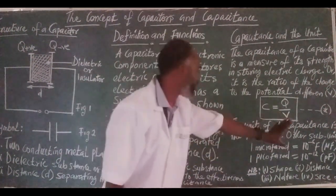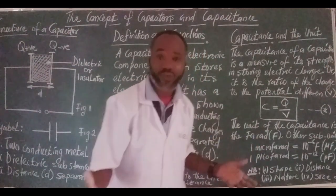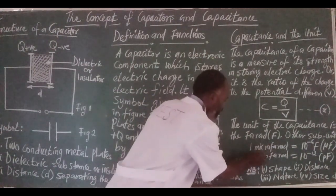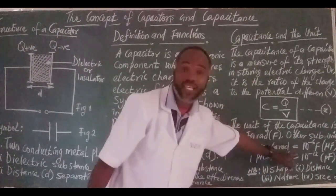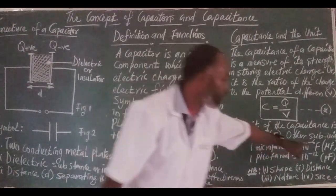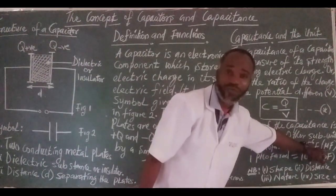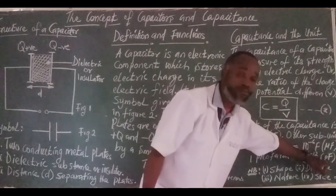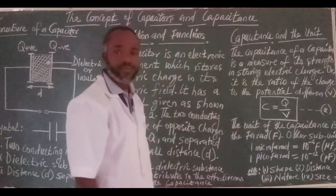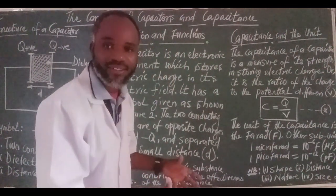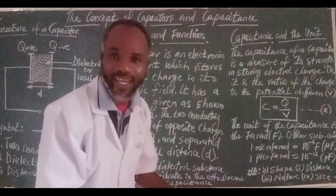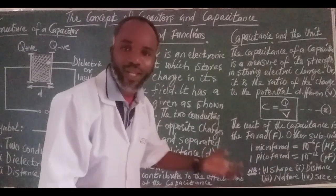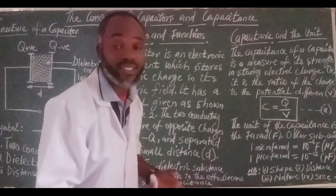Away from that, we have the unit of the capacitance as the farad. But there are also other sub-units such as one microfarad, which is equal to 10 raised to the power minus 6 farad, represented as μF. One picofarad is equal to 10 raised to the power minus 12, represented as pF. And so on and so forth. By the time we understand all these things, we are now familiar with the simple foundational aspects of what a capacitor is all about.